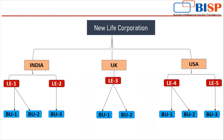Through this picture we can understand the legal entity concept in a better way. Here you can see we have an organization called New Life Corporation, operating its business in three countries: India, United Kingdom, and United States of America. In India, it has two legal entities, meaning two registrations, so we maintain two different legal entities. Under legal entity one, we have two business units — business unit one and business unit two. Whatever transactions or activities take place under business units one and two, legal entity one will be held responsible. The same is applicable to legal entity two, three, four, and five.